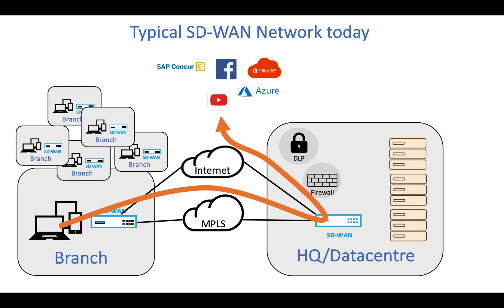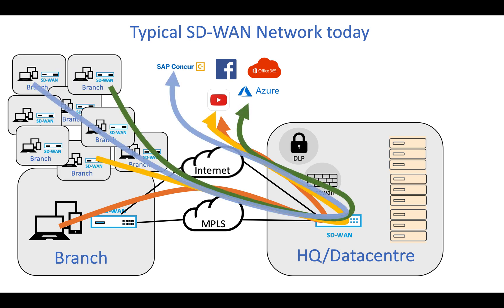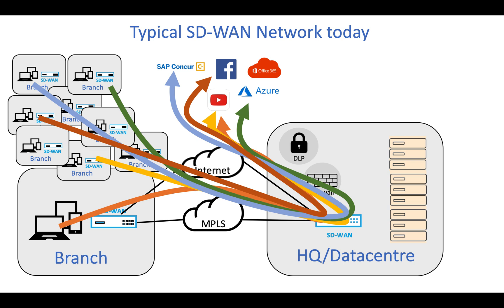When you add the fact that it's not just one branch connecting anymore — these businesses have multiple branches — all of that traffic is now having to flow across that MPLS or internet SD-WAN environment back to the data center, hairpin out to the web, and then come back again. This adds additional performance overhead and even more load on that internet link coming from the data center.